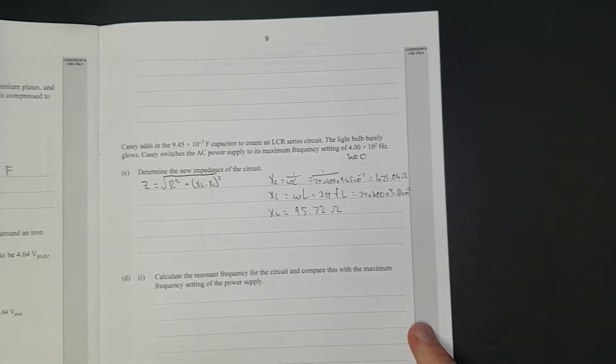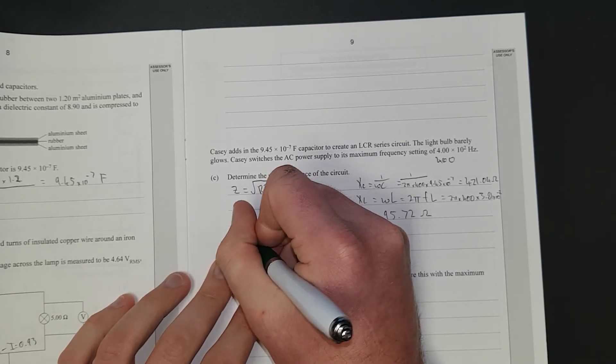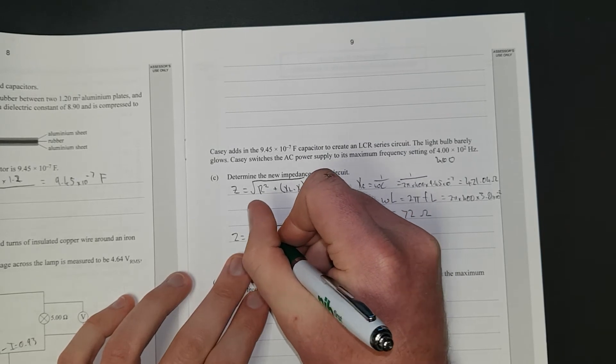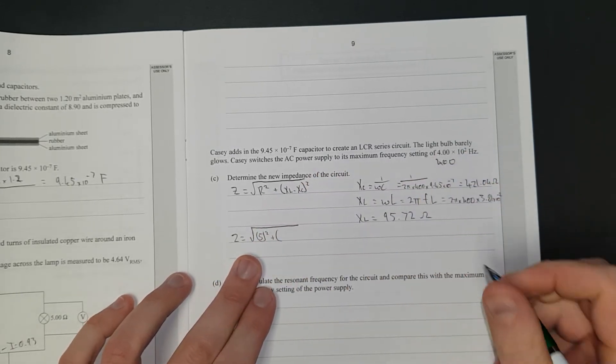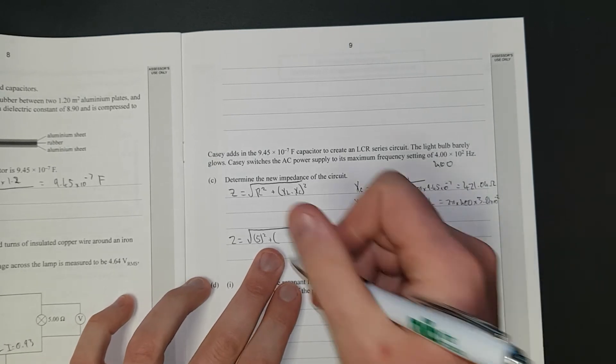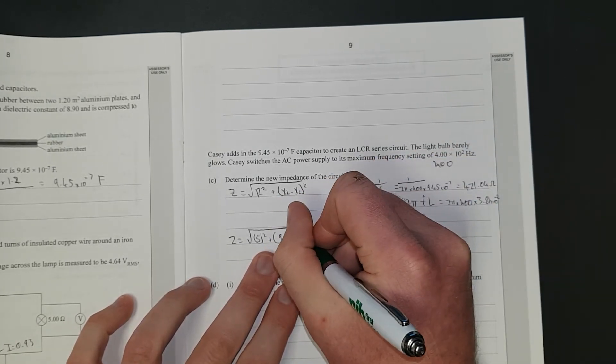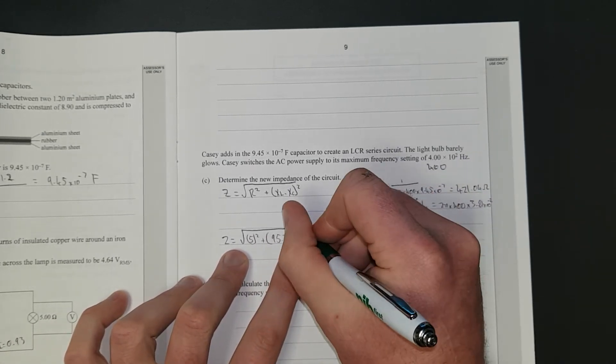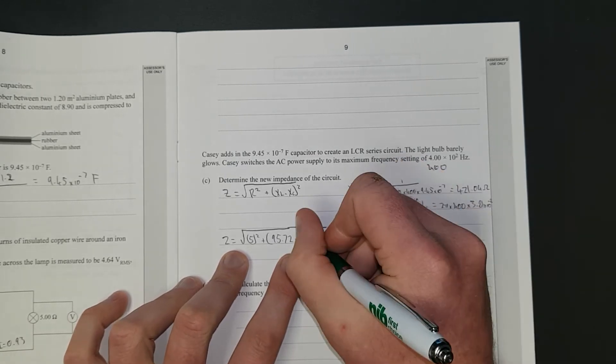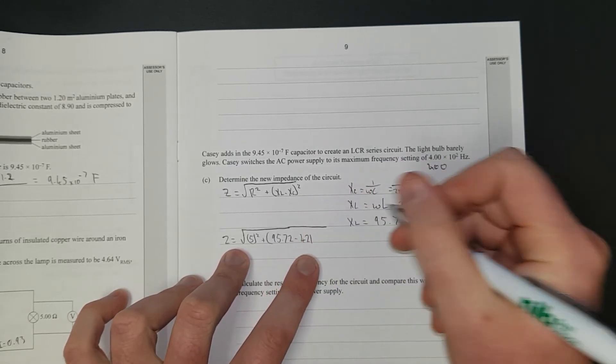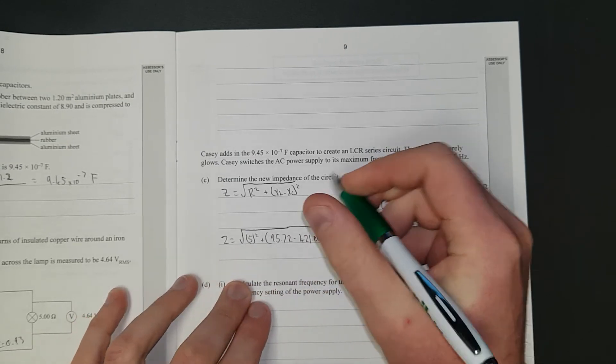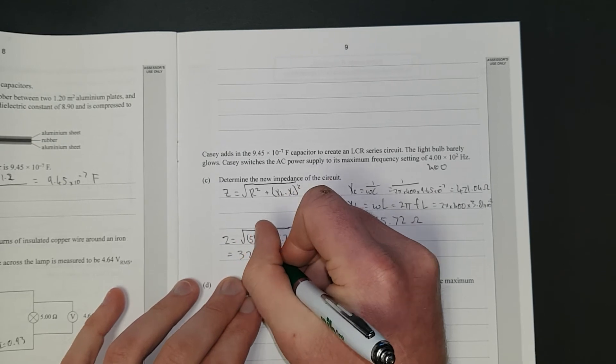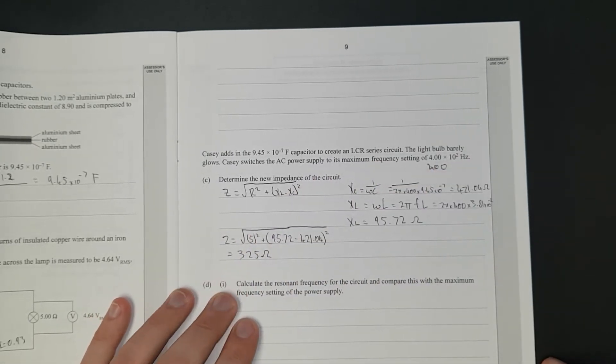And now I simply just plug and chug. Z, the impedance, is going to be equal to square root of 5 squared plus, 95.72, don't round, don't round until you get to the end. For people that do round, please don't. Pull the square root all the way across. What's XC? 421.04 bracket squared. And if you do that in your calculator that gives you 325.5 ohms.